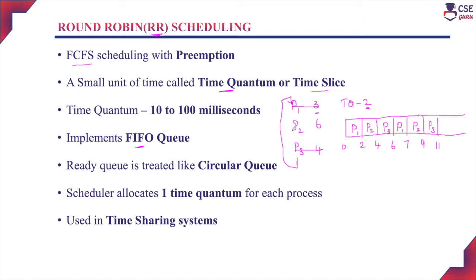Now only one process remains in the job queue — P2 — and it requires 2 more milliseconds to complete its execution. Process P2 will execute for 2 more milliseconds, so the total execution time is 13 milliseconds. In the Round-Robin scheduling algorithm, processes maintain a FIFO queue order and the ready queue is treated as a circular queue. Once the last process completes its execution, the queue moves back to the first process.